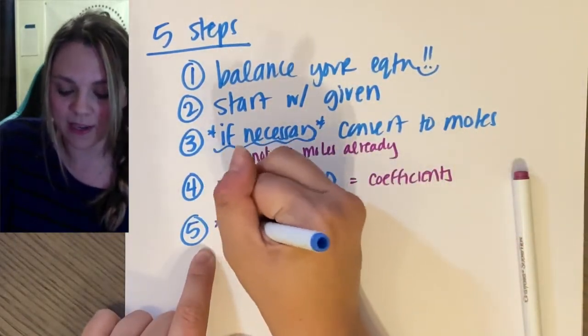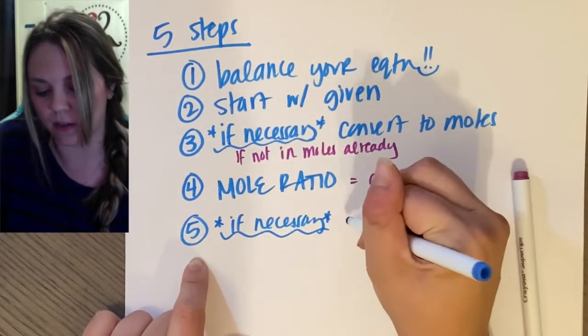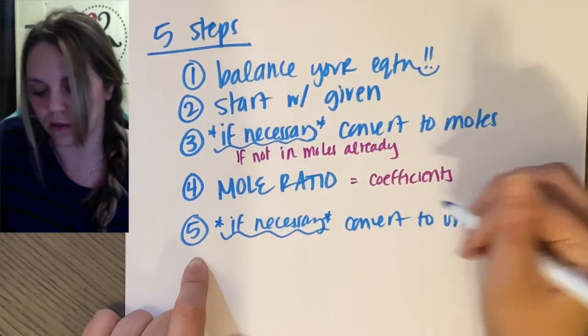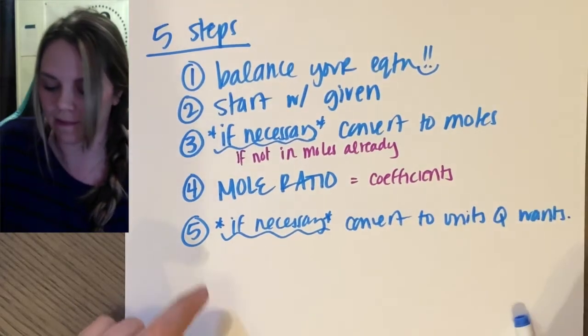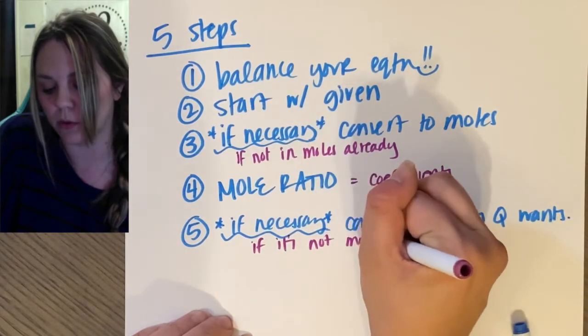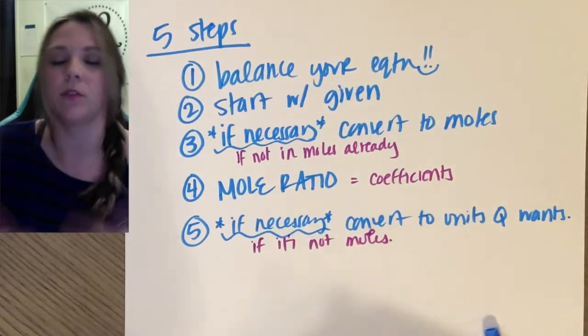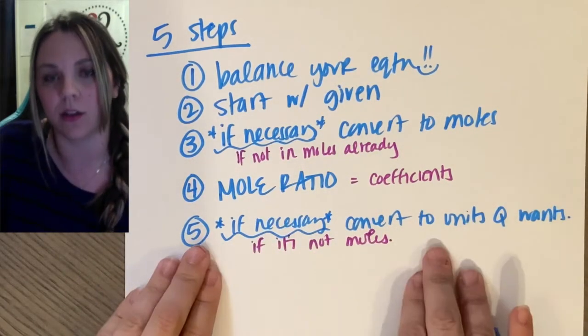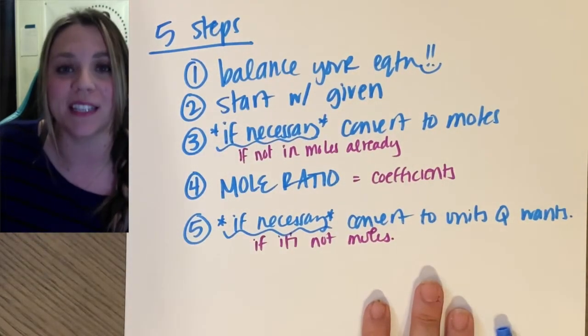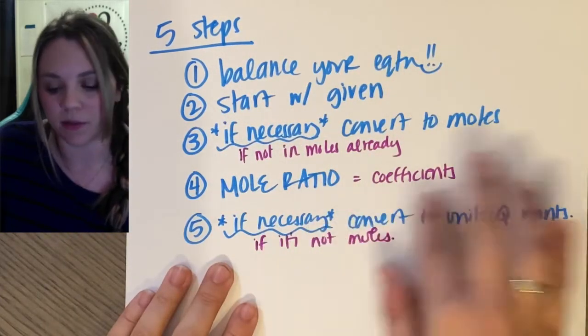And step five is again if necessary you're going to convert to the units the question wants, if it's not moles. Because when you use a mole ratio, you're going to be in moles. If the question asked you to find grams of a product, then you're going to convert to grams. So five steps and sometimes two of them aren't even necessary. Let's actually look at an example so this won't be so terrible.